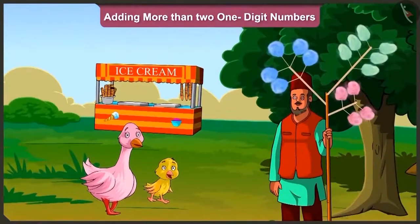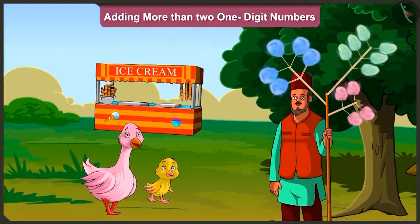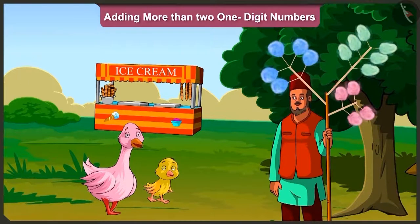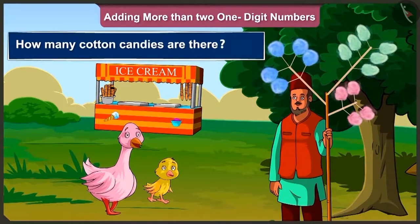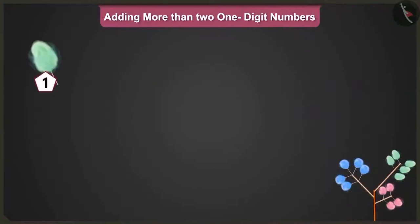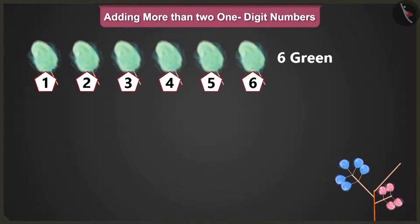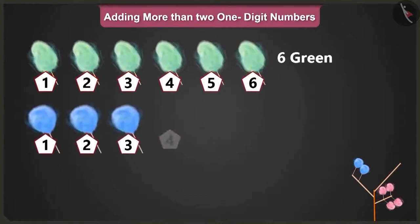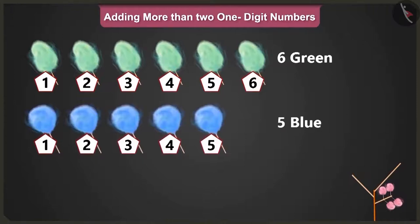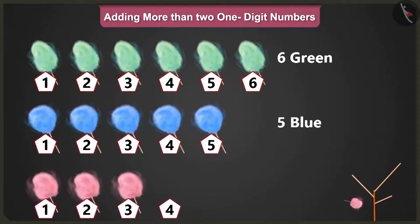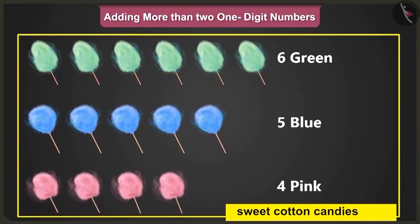Hey, look Auntie, what is this? Pilloo dear, this is a kind of sweet which is called cotton candy. And look, over here we have green, blue and pink-colored cotton candies. So come on, now tell me how many cotton candies are there? Here we have one, two, three, four, five and six green candies. One, two, three, four and five blue candies. And one, two, three and four pink sweet cotton candies.